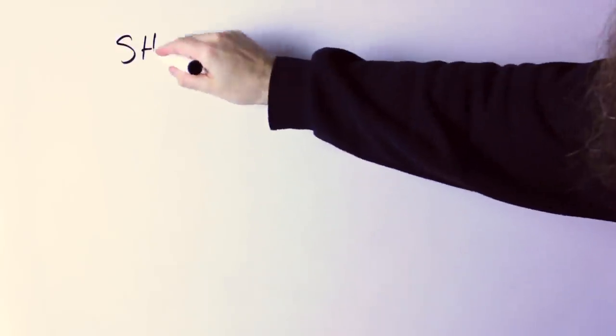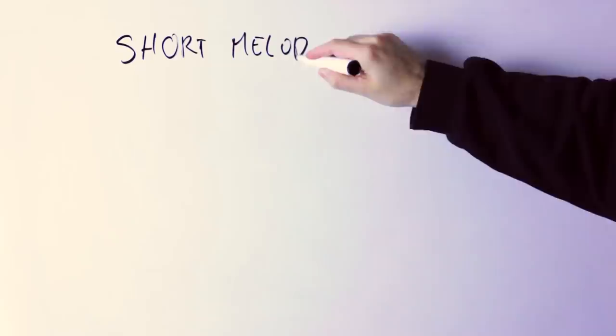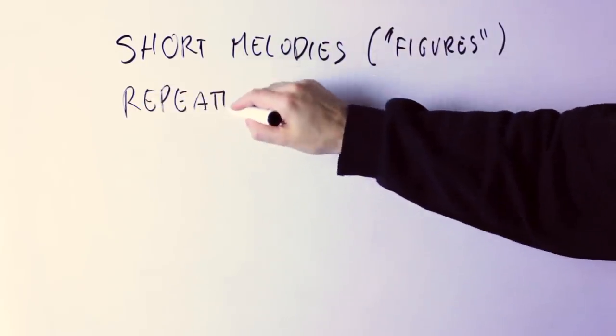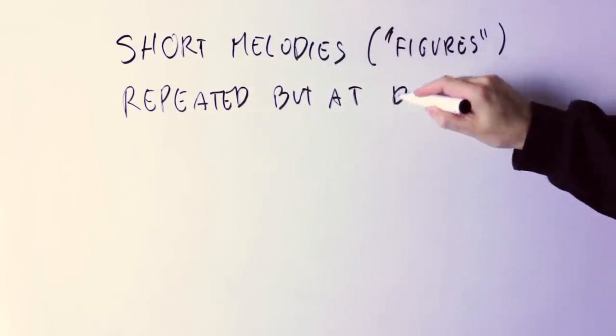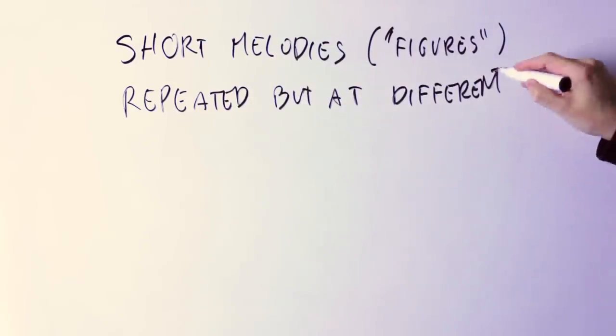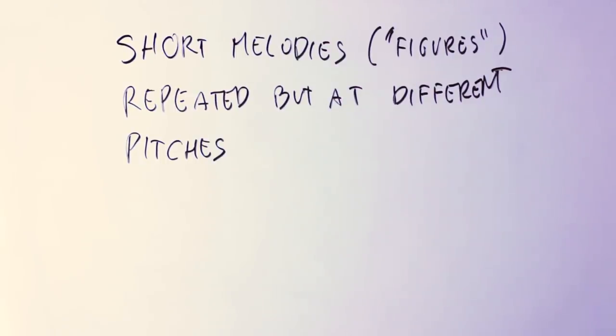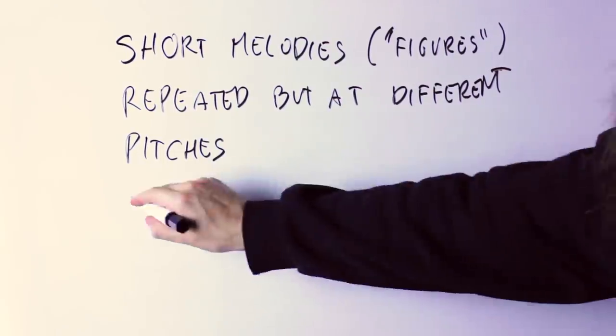Now you can hear how this line is built of short melodies that are repeated higher and lower in pitch, so it's not just a sequence of random notes. Corey Henry has in mind a few figures, a few short melodies, and is just moving them up and down in pitch on the keyboard. This is what makes this solo sound great.